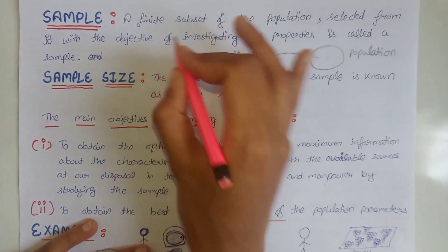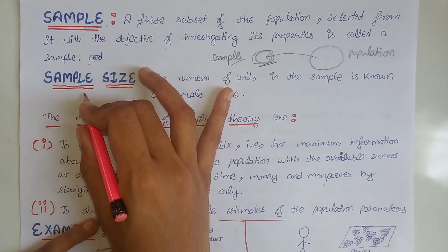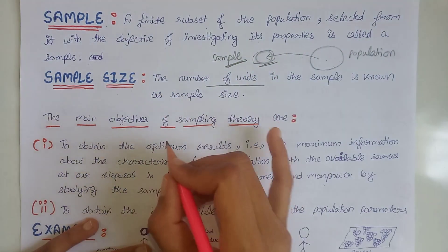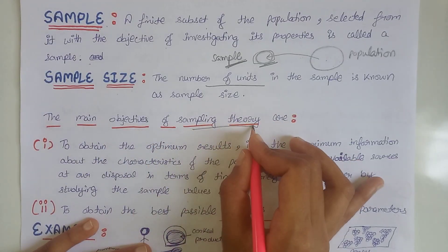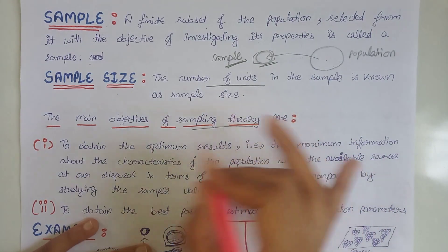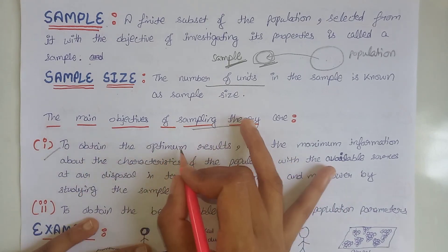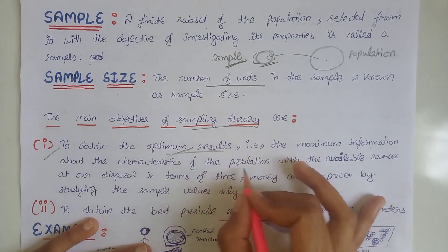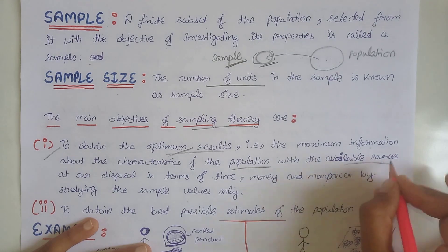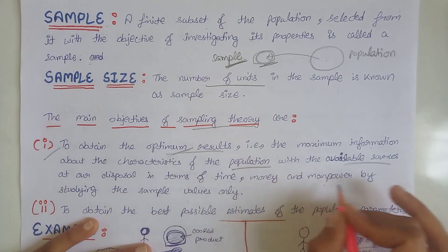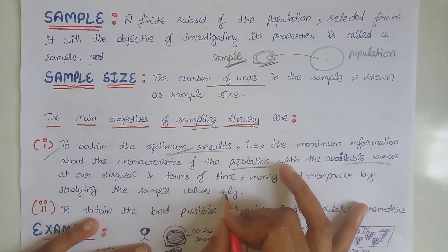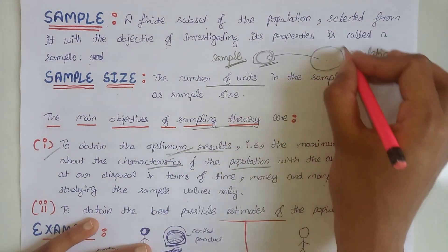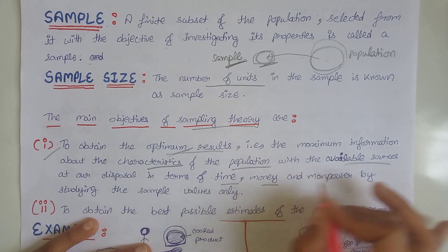The number of units in the sample is known as the sample size. Now let's see some main objectives of sampling theory. The first purpose is to obtain the optimum result — that is, maximum information about the characteristics of the population with available sources in terms of time, money, and manpower, by studying the sample values only.